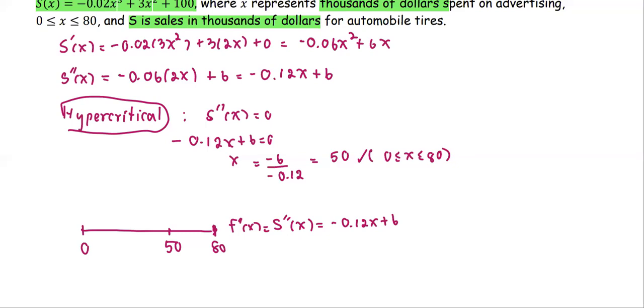For the value where x is between 0 and 50, let's pick a number, for example x = 10. If x is 10, we have 10 times -0.12, or -1.2, plus 6. It's going to turn out greater than 0.